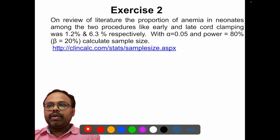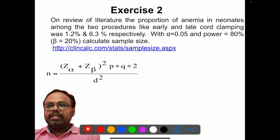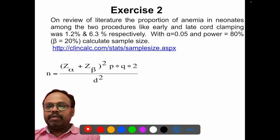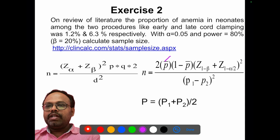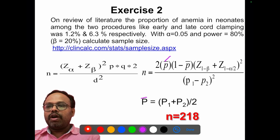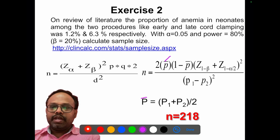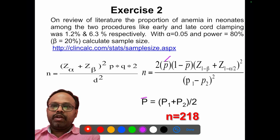The next question involves calculation of proportion between two groups using the formula where prevalence-bar = (P1 + P2) / 2. Applying this formula gives an answer of 218. You can also do this with a clinical calculator.